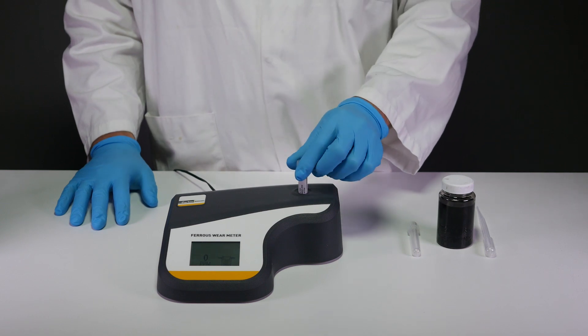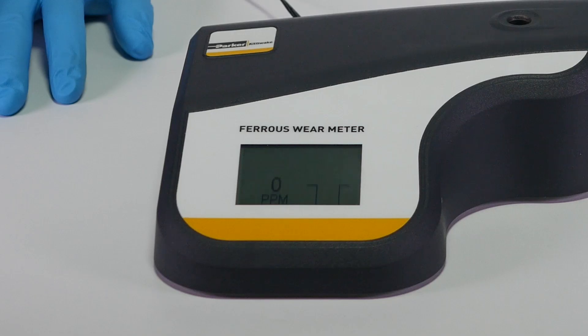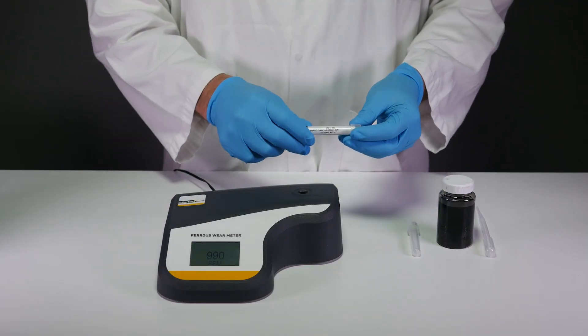simply insert the sample into the FWM for approximately one second, then remove. The result will be displayed on the screen for comparison against the check standard.